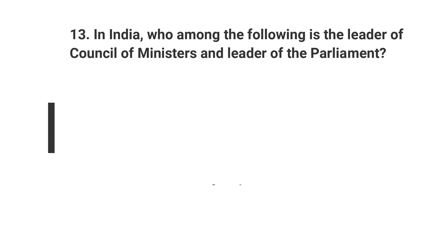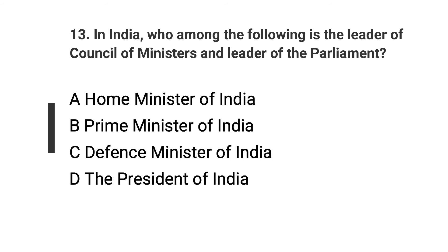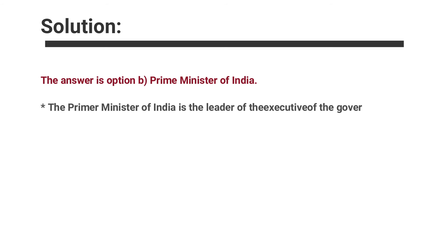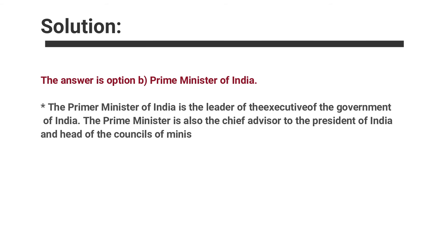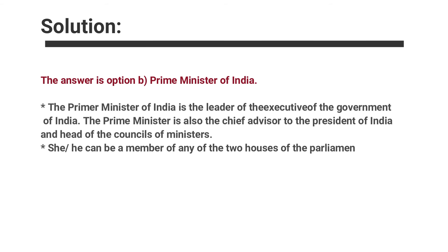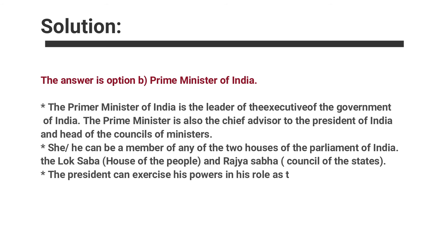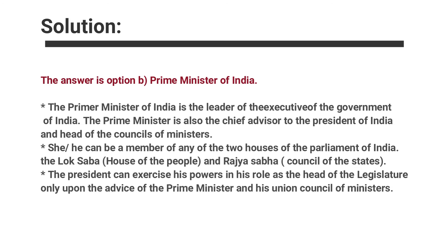Question number thirteen: In India, who among the following is the leader of the Council of Ministers and leader of the Parliament? Options are A. Home Minister of India, B. Prime Minister of India, C. Defence Minister of India, D. President of India. The answer is option B, Prime Minister of India. The Prime Minister of India is the leader of the executive branch of the Government of India, the chief advisor to the President, and the head of the Council of Ministers. The President can exercise legislative powers only upon the advice of the Prime Minister and the Union Council of Ministers.